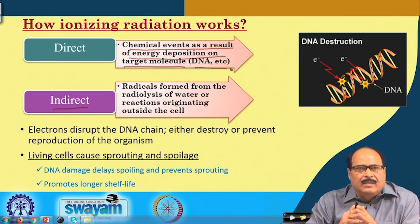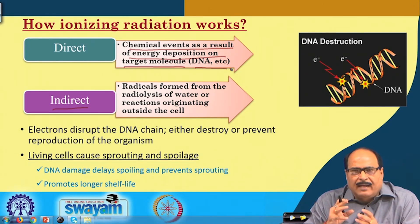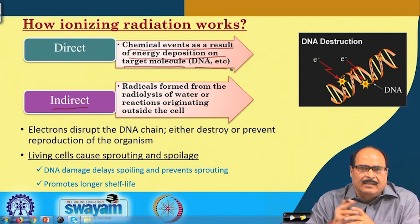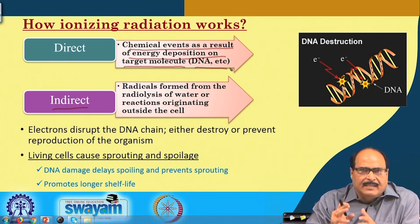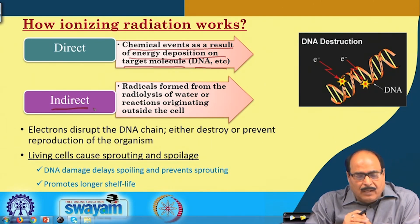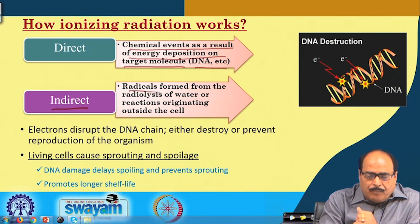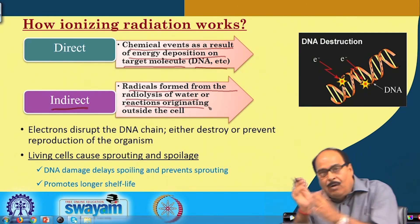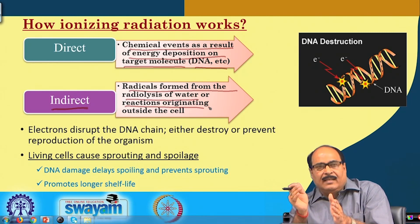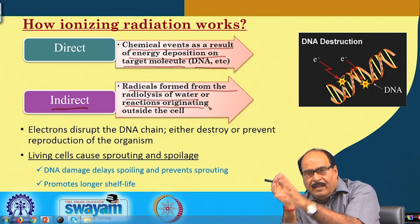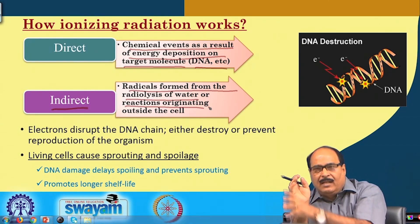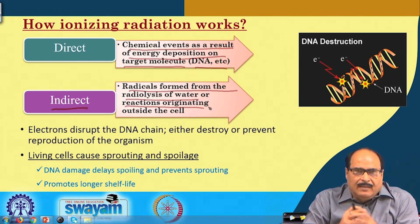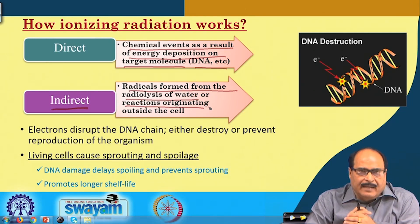However, the direct action mechanism does not hold true for multicellular organisms unless we assume they are a single entity. For multicellular organisms, the indirect action mechanism appears more correct, where radicals are formed by radiolysis of water or reactions originating outside the cells. The radiation hits not the target molecule directly but produces its effect outside the cell, ultimately causing ionization effects, and multicellular organisms are destroyed by this indirect action mechanism.